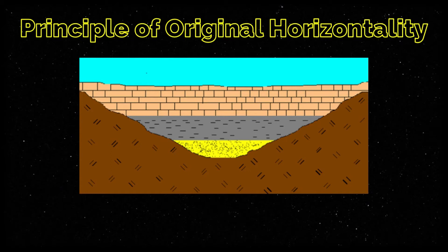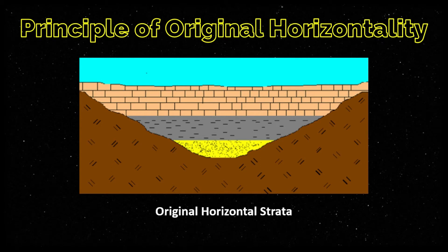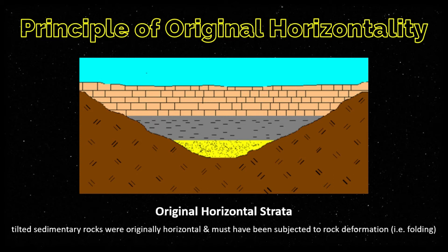The principle of horizontality is best described by this figure. When sediments are deposited, they form essentially horizontal or flat layers — this is what we call original horizontal strata. This principle basically states that tilted sedimentary rocks were originally horizontal and that they must have been subjected to rock deformation, such as folding. We have another video for that, so if you're not familiar with folding or faults, you may go to that.